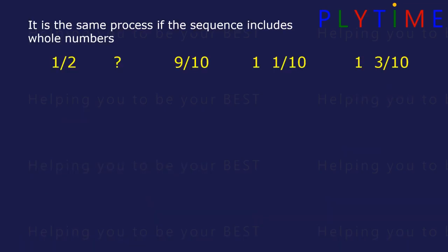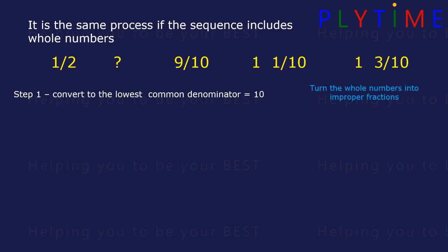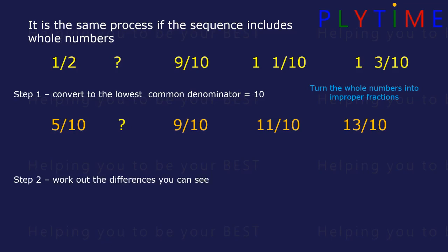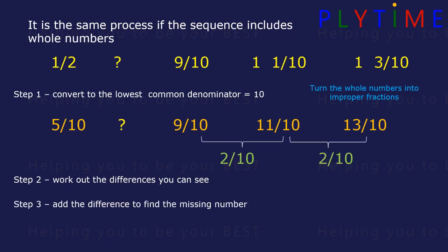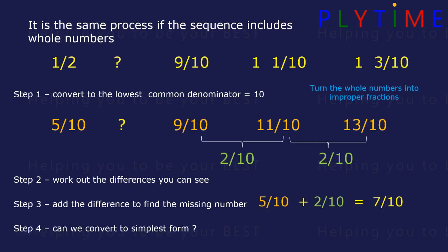It's the same process if the sequence includes whole numbers. We find the lowest common denominator — here 10. And we turn the whole numbers into improper fractions. So a half becomes 5 tenths, 1 and 1 tenth is 11 tenths, and 1 and 3 tenths becomes 13 tenths. Between 9 tenths and 11 tenths it's 2 tenths, and between 11 and 13 tenths it's 2 tenths. So 5 tenths plus 2 tenths equals 7 tenths. We can't simplify further, so 7 tenths is the answer.